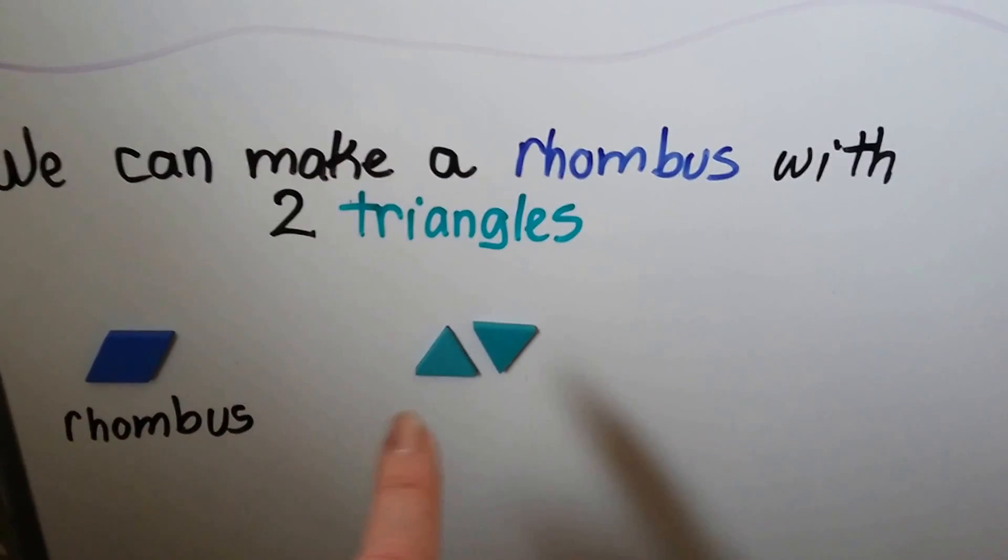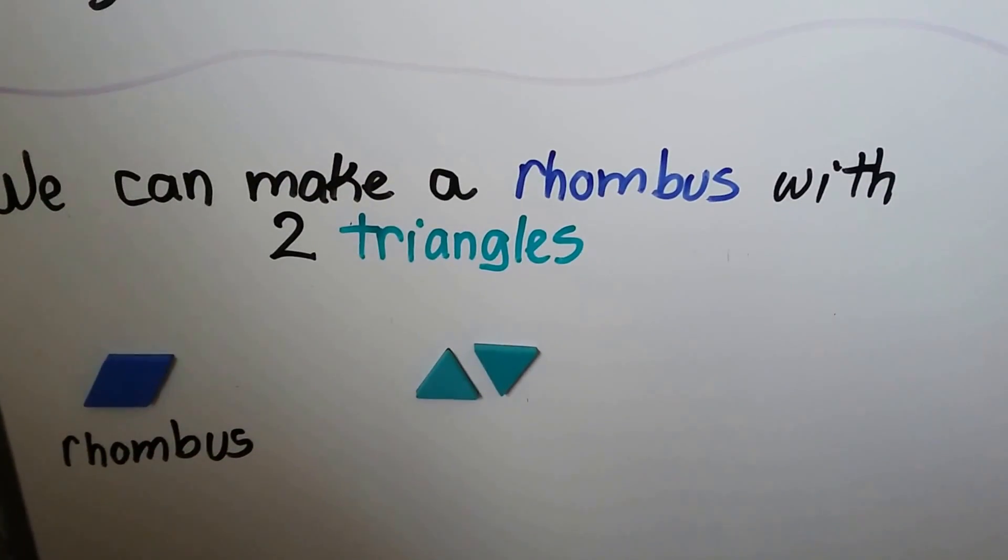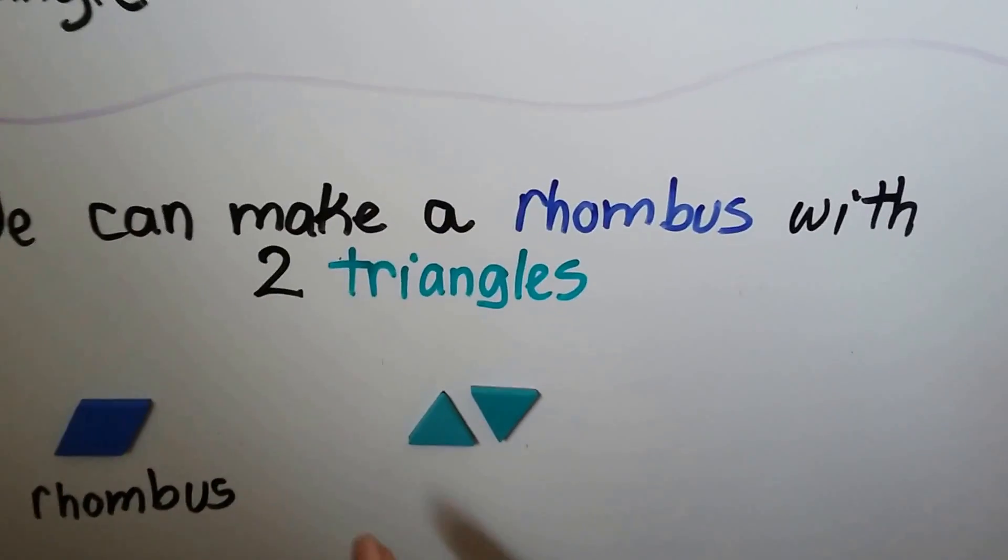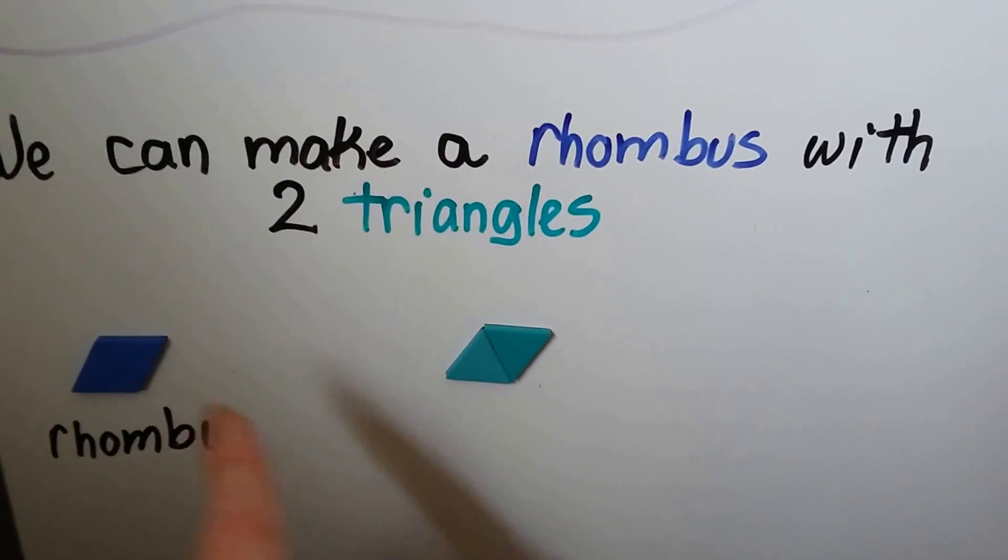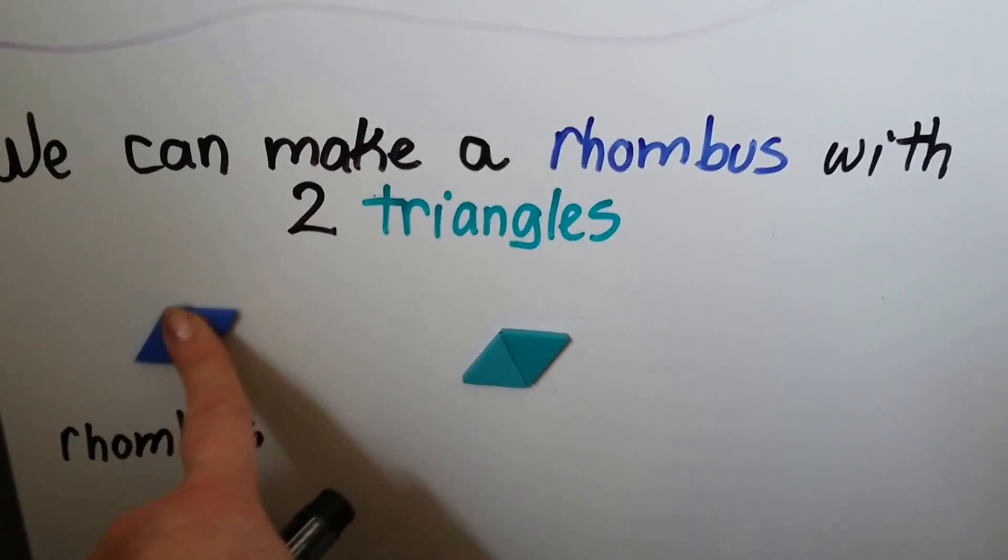Here's a rhombus. We can put two triangles together and make a rhombus. If I slide them together like this, look, they make a rhombus just like this one.